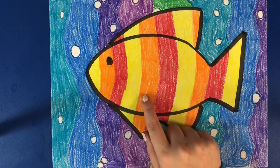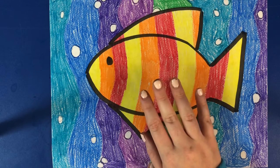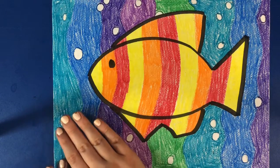Let's talk about warm colors: red, orange, and yellow. These are colors that make us think of warm things like the sun or a campfire, things that keep us warm.